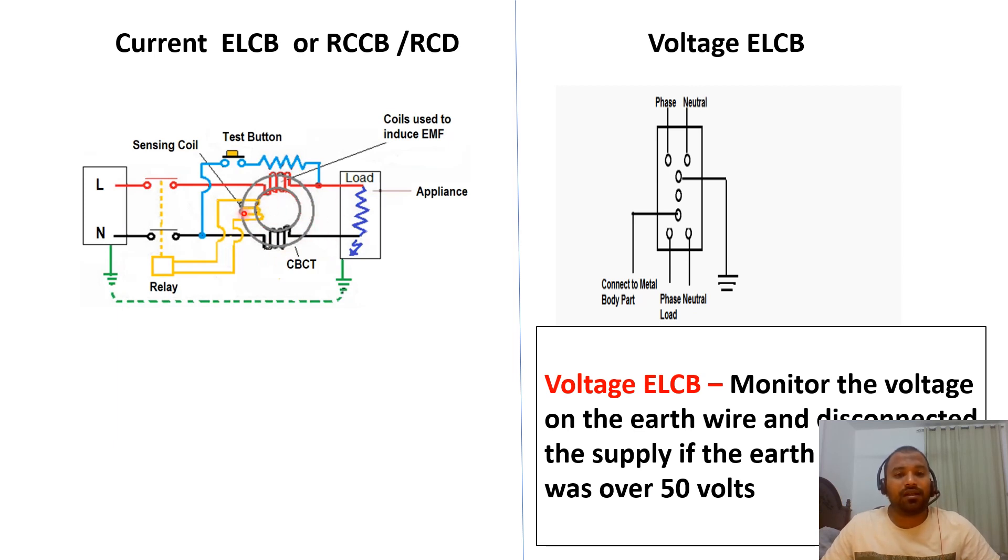What will happen when there is a current flows through the load and returns? Opposite flux will be generated here and nullify. When there is a leakage, what will happen?